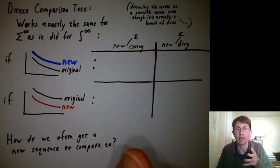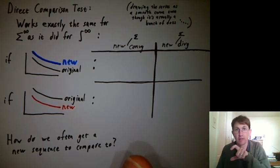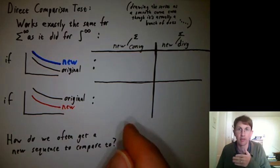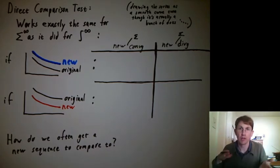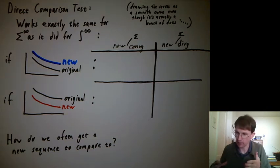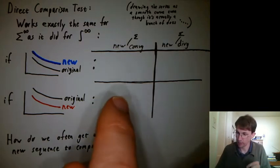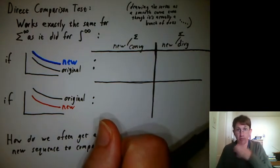In the integral test, we compared the sum of a bunch of box heights to the area under an integral, and we said one is clearly always larger than the other. Now we're going to take that idea of comparing two things where one is always larger than the other and do both of them for sequences instead of a sequence versus an integral.